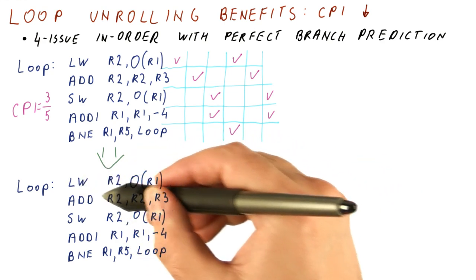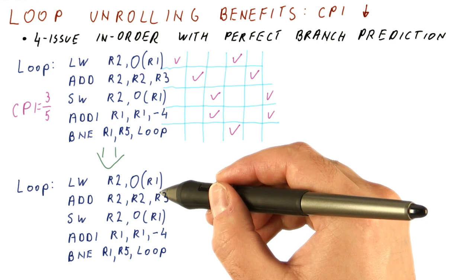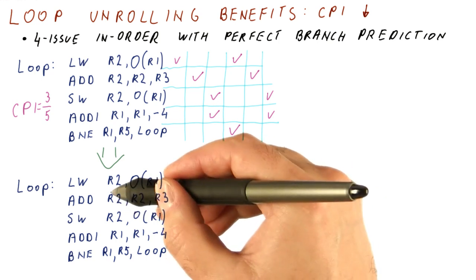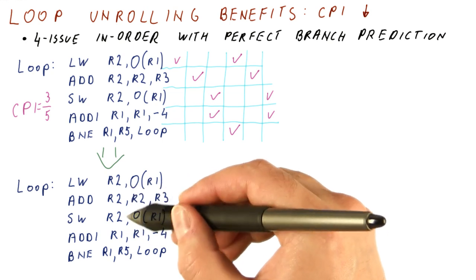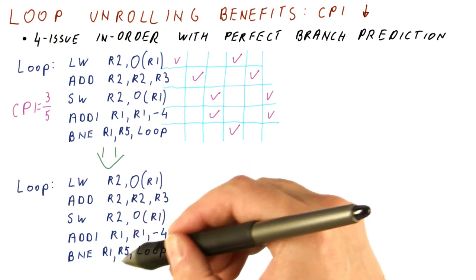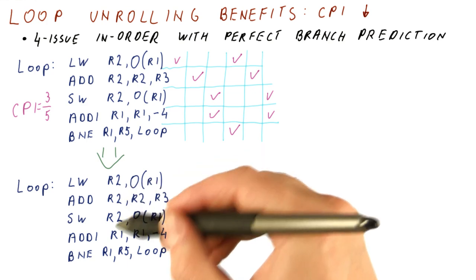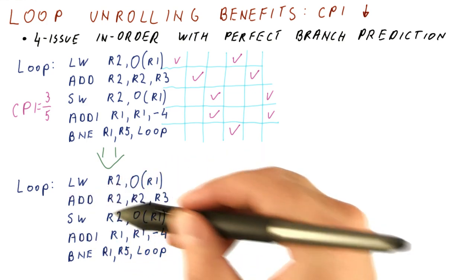So clearly here, this load could not be done in parallel with the next instruction because there is a dependence there. So we need to find something, and it cannot be the branch because it needs to stay at the end of the iteration. So this add i can move there.